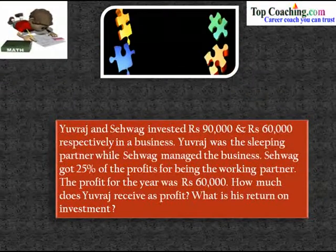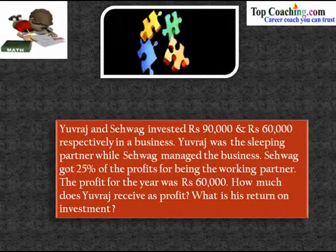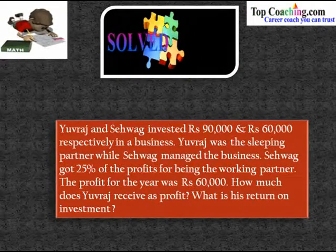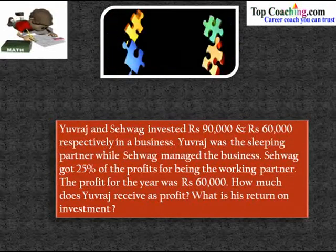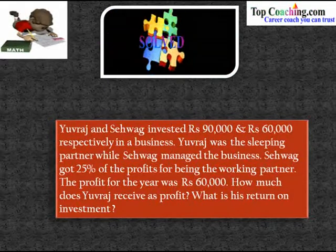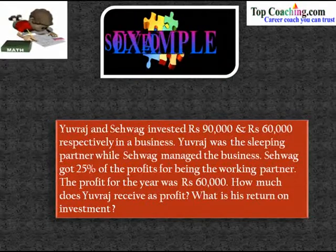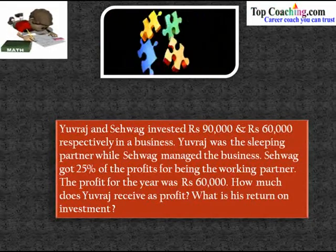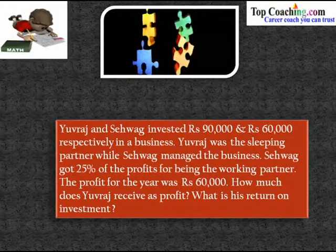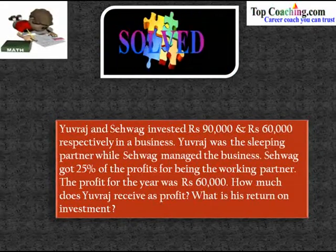Let's see an example. Yuvraj and Saivak invested rupees ninety thousand and rupees sixty thousand respectively in a business. Yuvraj was the sleeping partner while Saivak managed the business. Saivak got 25% of the profits for being the working partner. The total profit for the year was rupees sixty thousand. We need to find how much Yuvraj receives as profit and what his return on investment is.